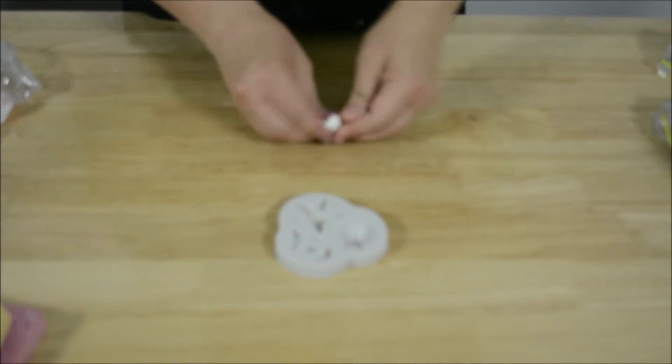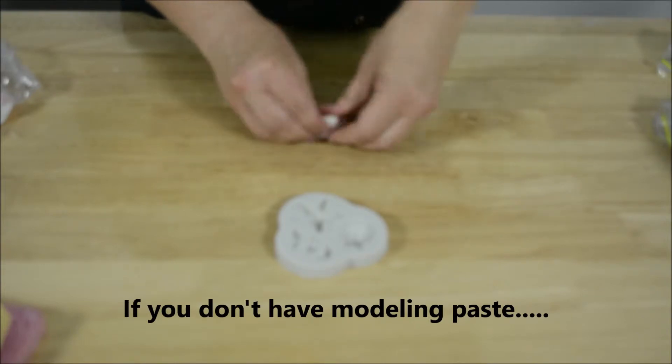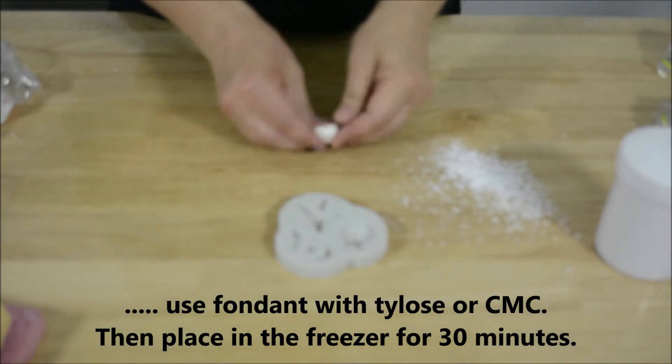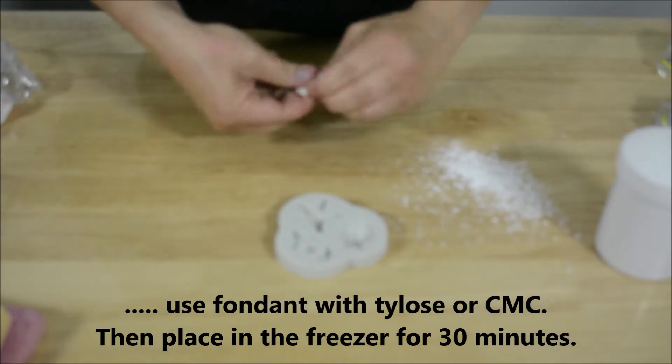Some people dust the molds before you put the paste in. I don't usually myself. I usually just like to have a little bit of icing sugar on the side. So I soften a piece of the modeling paste.